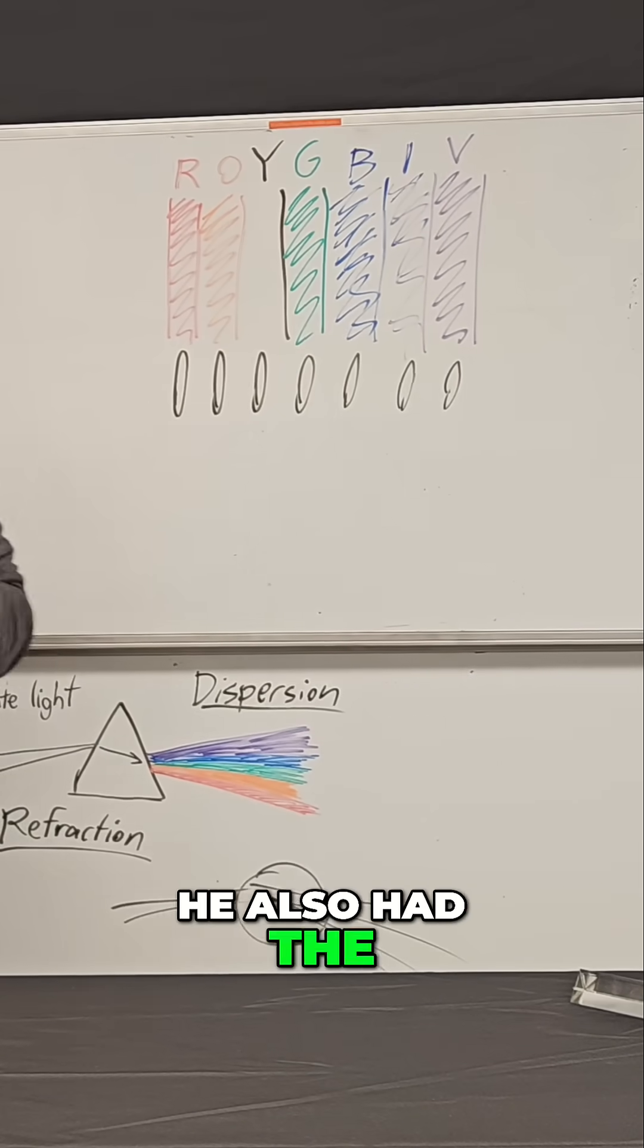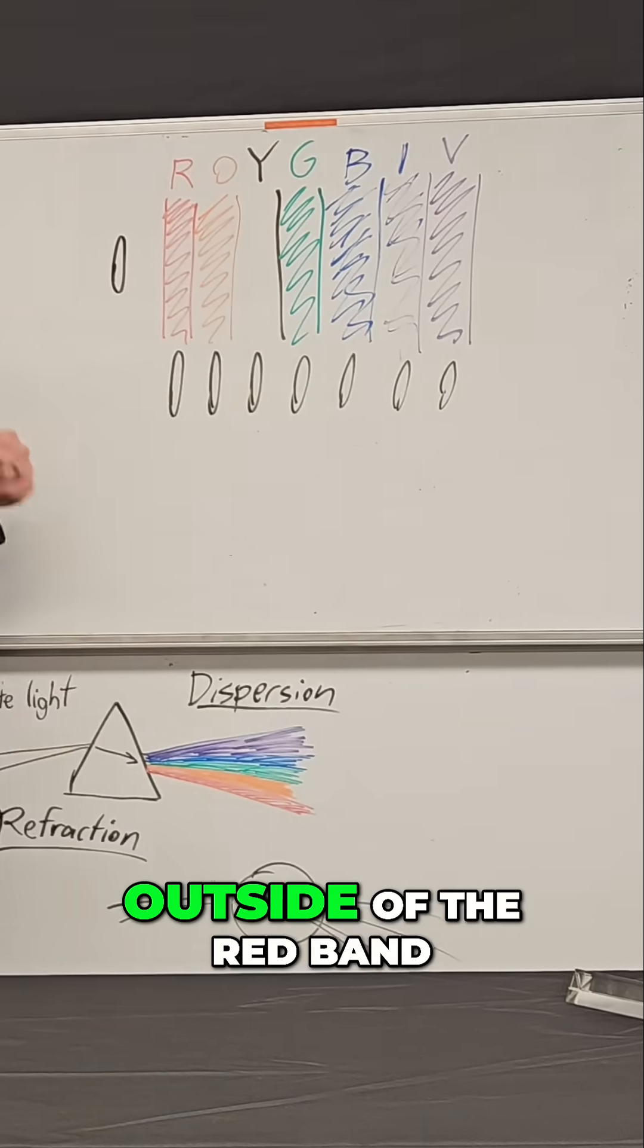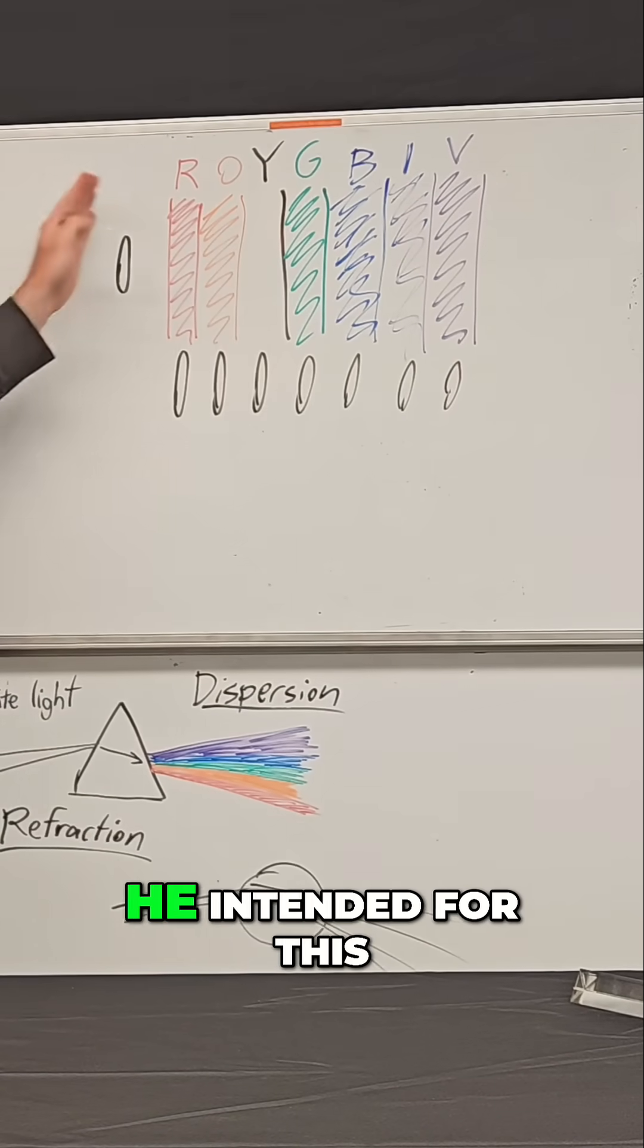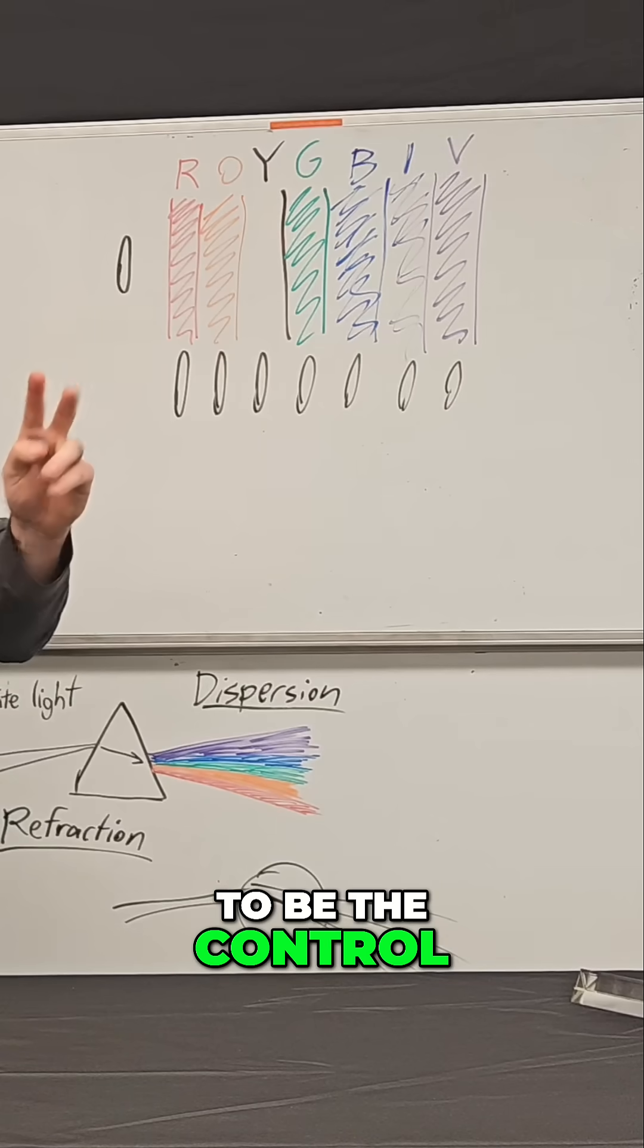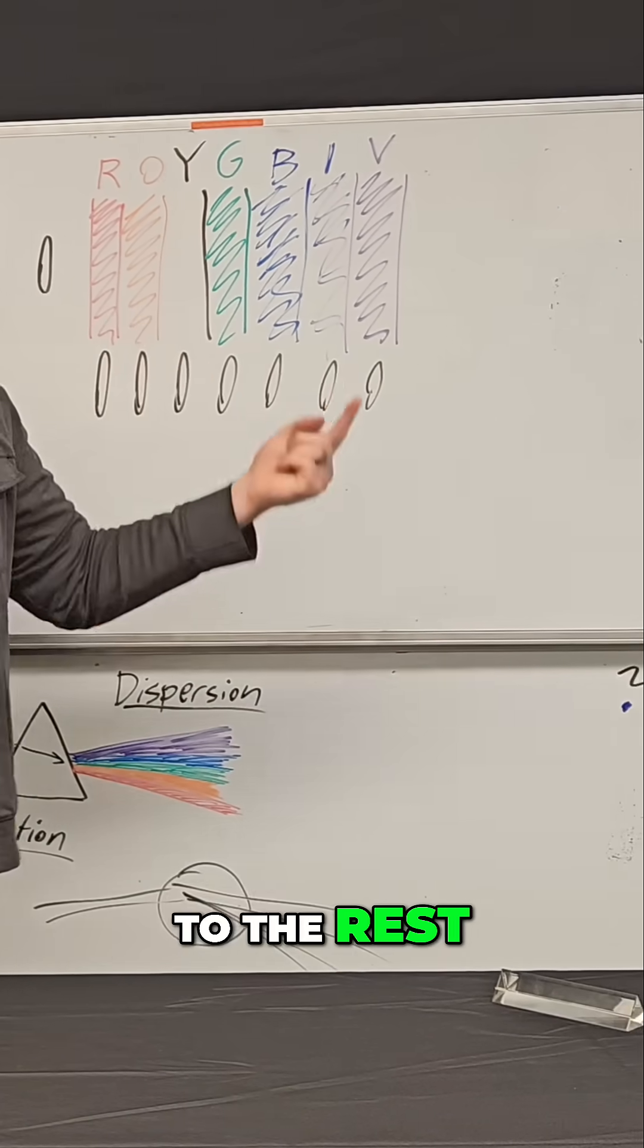And so he also had the brilliant idea of putting an extra thermometer out here, outside of the red band. And he actually did this by mistake because he intended for this to be the control so that this could be normal temperature, and then he could compare that to the rest.